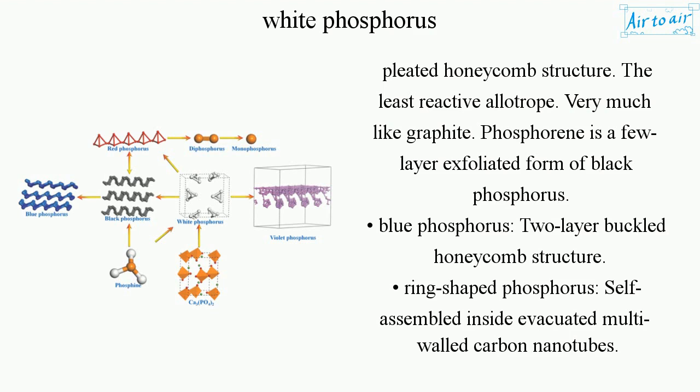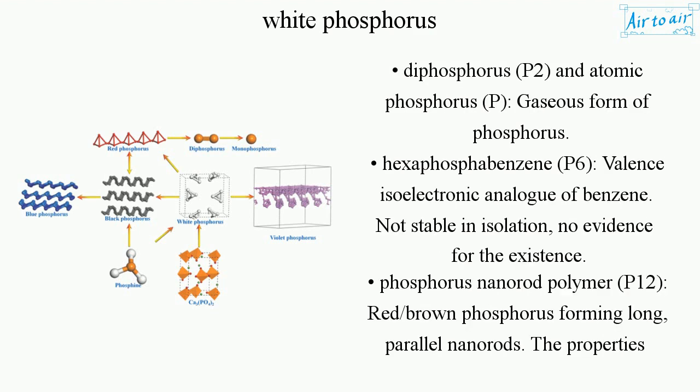Blue phosphorus has a two-layer buckled honeycomb structure. Ring-shaped phosphorus is self-assembled inside evacuated multi-walled carbon nanotubes. Diphosphorus (P2) and atomic phosphorus (P) are gaseous forms of phosphorus. Hexaphosphabenzene (P6) is a valence isoelectronic analog of benzene, but is not stable in isolation with no evidence for its existence.